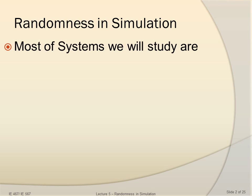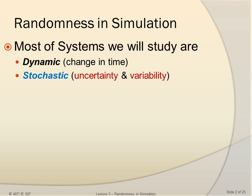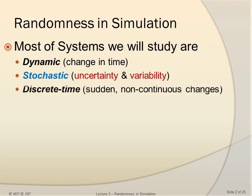Randomness in simulation is important because most of the systems that we will study are dynamic — they change in time — stochastic, with uncertainty and variability, and that's where we really need the randomness. They are also discrete time, which means there are some sudden, non-continuous changes.